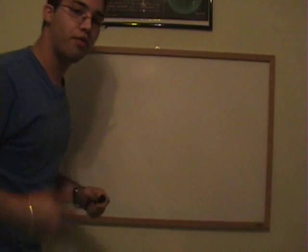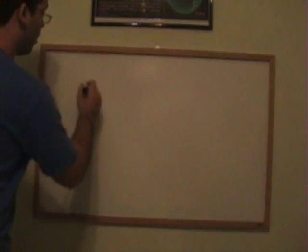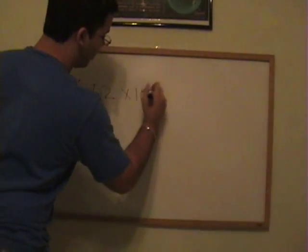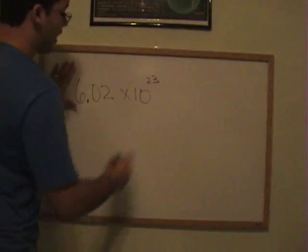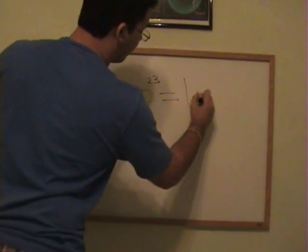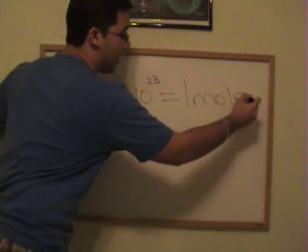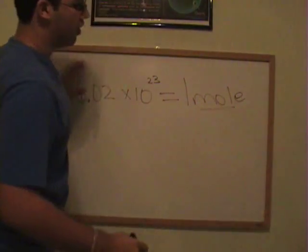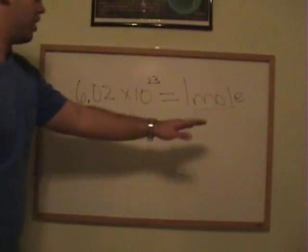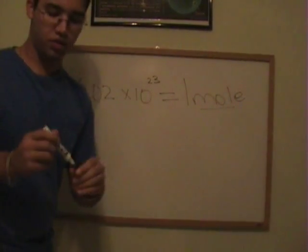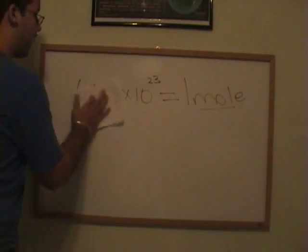Also, another thing, before we continue on to the conversions, 6.02 times 10 to the 23rd is known as one mole. You could add the E at the end, or you could just leave it as mole without the E. So one mole of anything is 6.02 times 10 to the 23rd.